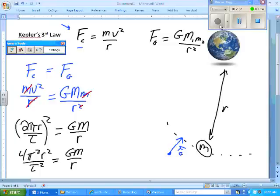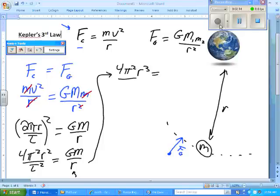And we can multiply both sides by r to get rid of that r. And I'm just going to bring my work over here because I ran out of space. So I can say 4 pi squared r cubed divided by GM equals tau squared. Look good?